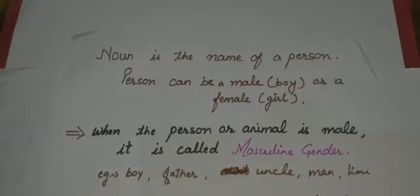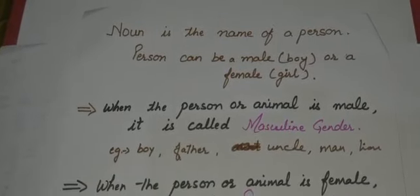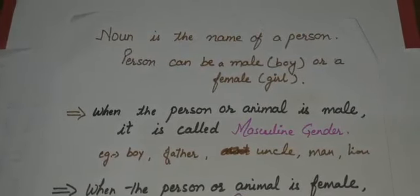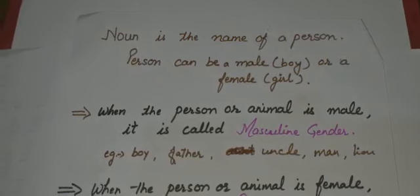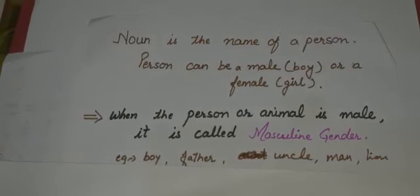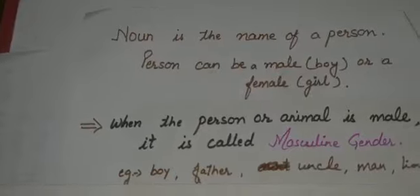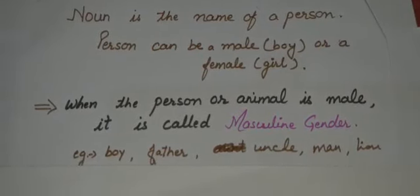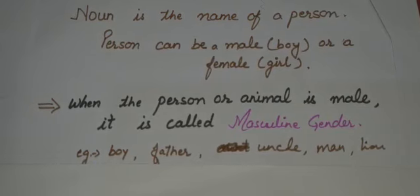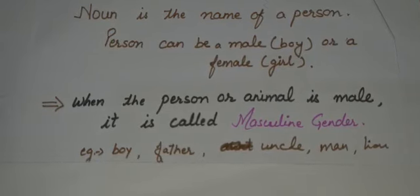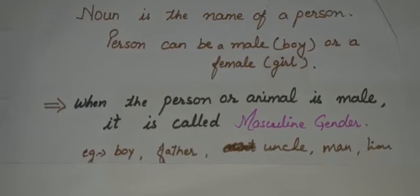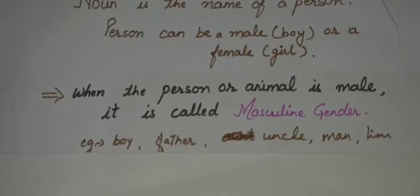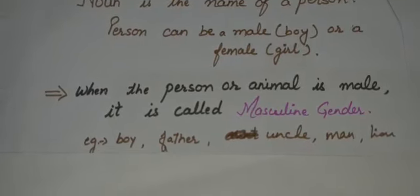When a person or an animal is male, it is called masculine gender. Examples include boy, father, uncle, man, and lion. These are the names of male persons or animals, so they are masculine gender.